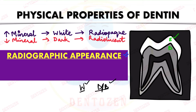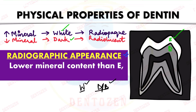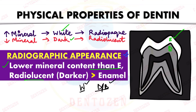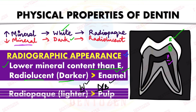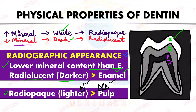Dentine has lower mineral content than enamel, so it appears radiolucent or darker compared to enamel. However, when compared to pulp — which has no mineral and appears black — dentine is radiopaque or lighter than pulp.